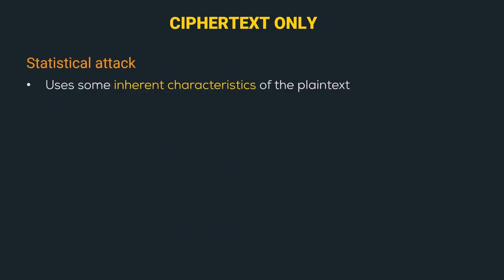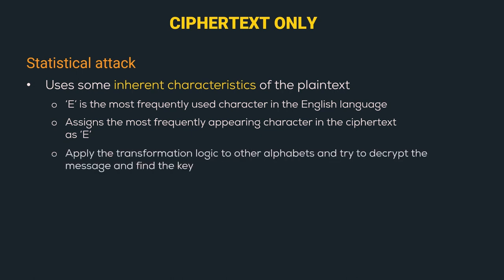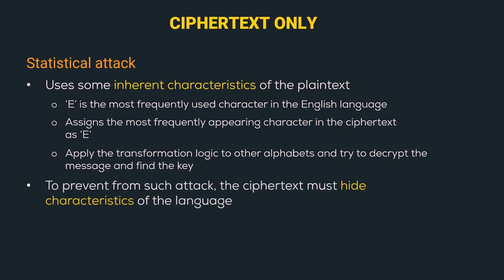A better approach is the statistical attack. In a statistical attack, we use some inherent characteristics of the plaintext. For example, the letter E is the most frequently used character in the English language. Oscar assigns the most frequently appearing character in the ciphertext as E, then applies the same transformation logic to other alphabets to try to decrypt the message and find the key. To prevent such attacks, the ciphertext must hide characteristics of the language — for example, by using compression to remove inherent language characteristics.